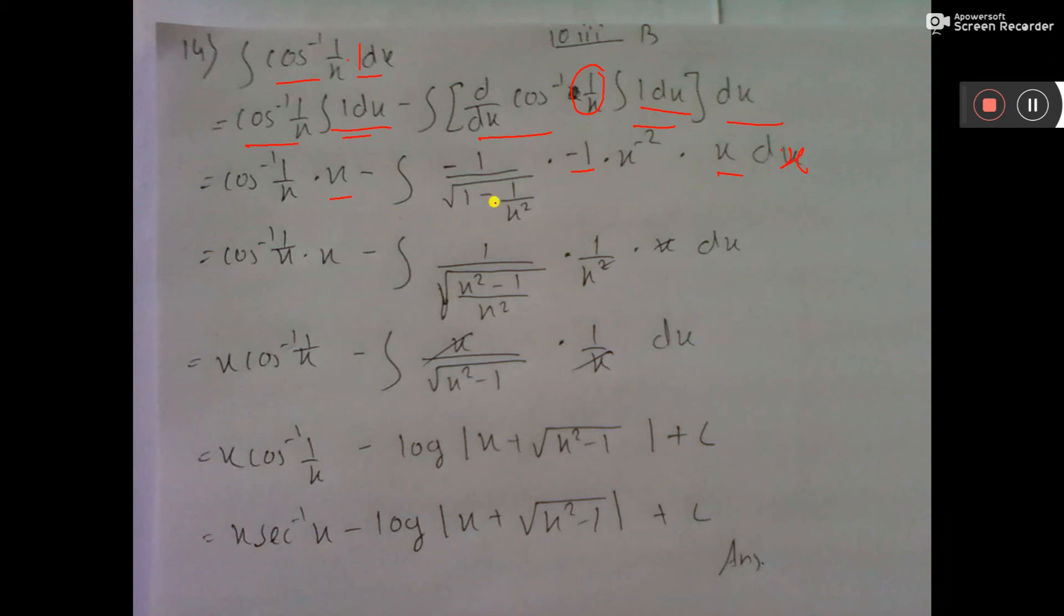Now, this minus and minus and this minus, 3 minus will be minus only. x to the power minus 2 will be 1 by x square. Now, this 1 will cut another left. Here,